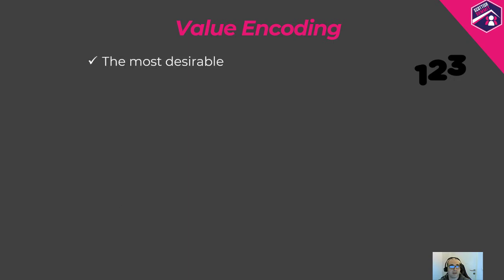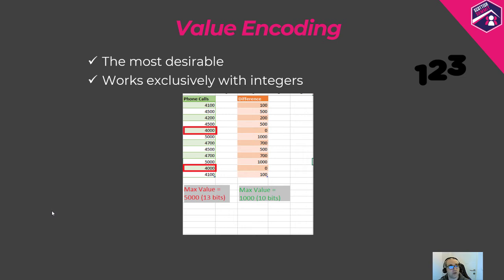Value encoding is the most desirable encoding type since it works exclusively with integers and therefore requires less memory space than working with text values. For example, if we have a column containing the number of phone calls per day and the value varies from 4,000 to 5,000, VertiPaq finds the minimum value — 4,000 — sets it as a starting point, then calculates and stores the difference between that value and all other values. Using this encoding type we manage to save three bits per row, and when multiplied by millions or billions of rows, the memory savings become very significant.